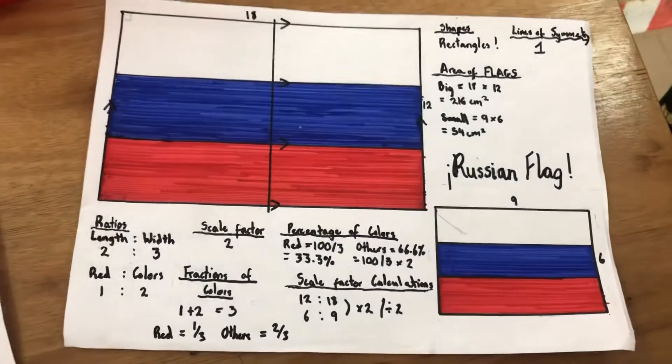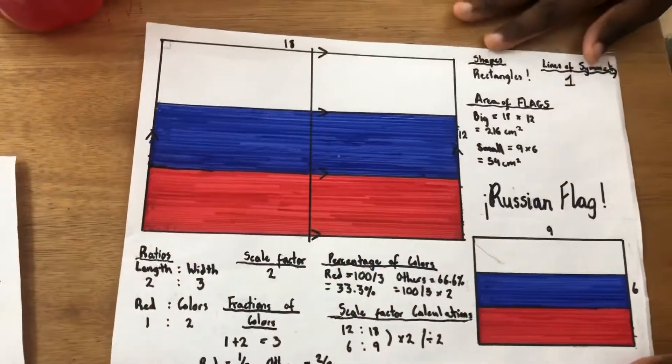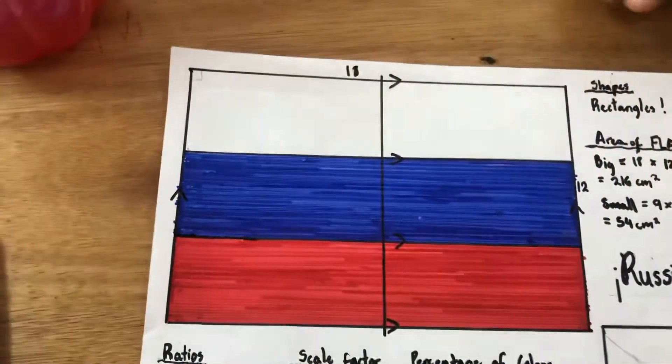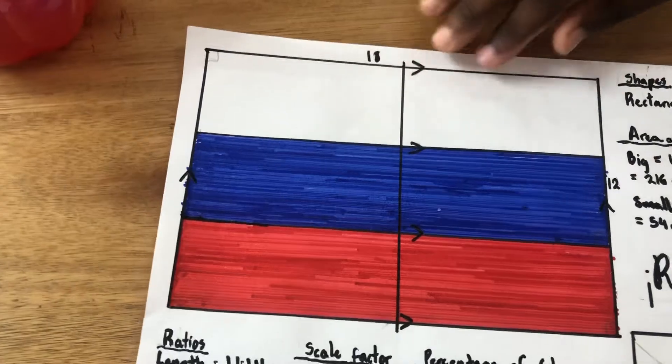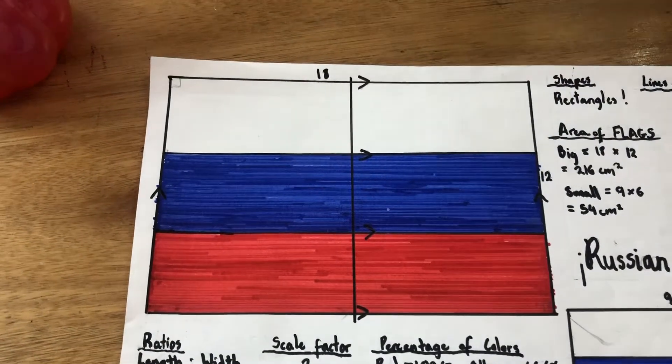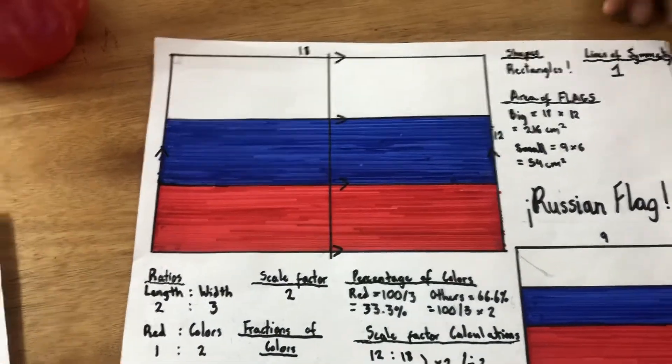Okay, so my guest presenters are going to show me all these different maths. Here's our first one. What country is this? This is the Russian flag and I'm going to show you the ratio of length to width. So the Russian flag's length to width is 2 to 3 but I represented it as 12 to 18 and 6 to 9. Okay, because both of those are in the ratio of 2 to 3. Fantastic.